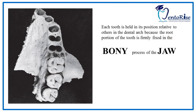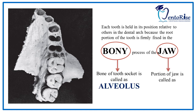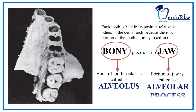The root portion is not visible in the oral cavity. It is firmly fixed inside a bony process of the jaw so as to hold the tooth in its position relative to the others. The bone of the tooth socket is called the alveolus, and the portion of the jaw which contains the tooth is called the alveolar process.